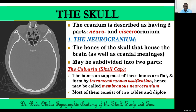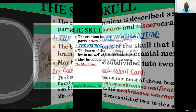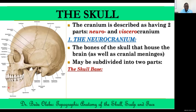The bones that form the calvaria are many. In this image we can identify the parietal bone, the squamous part of the frontal bone, the squamous part of the temporal bone, the squamous part of the occipital bone, and the greater wing of the sphenoid bone. Those are the bones which form the membranous neurocranium — the calvaria, the top part of the skull.